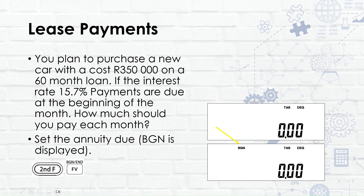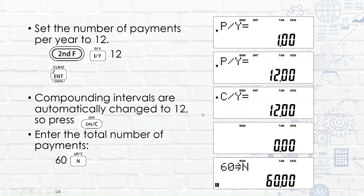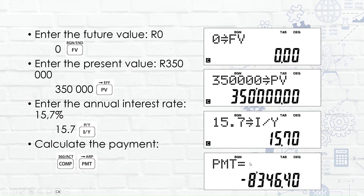Because payments are due at the beginning of the month, we first set the calculator to annuity due by pressing second function and future value — you'll see 'begin' displayed. Then follow the normal steps: set payments per year, check compounding intervals, calculate total number of payments, enter future value, present value, interest rate, and compute the payment.